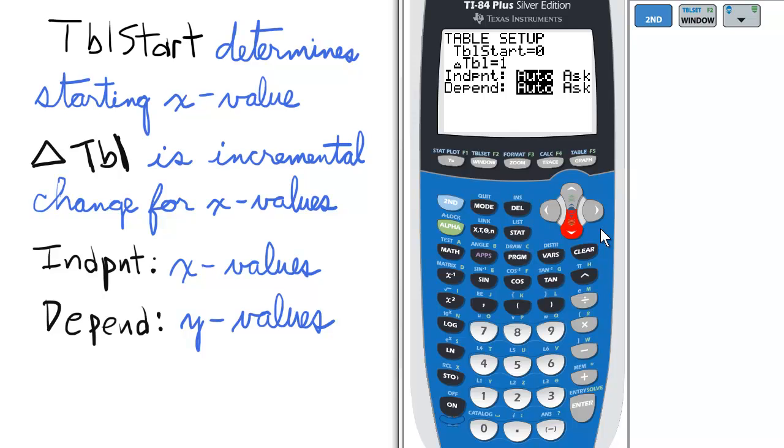Typically, if there is a fractional coefficient for the leading power of x, choose the denominator of the fraction. For example, if my leading term is 1 third x squared, I will choose 3 as my delta x.